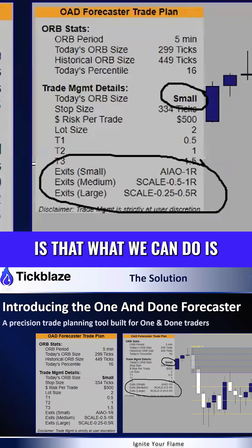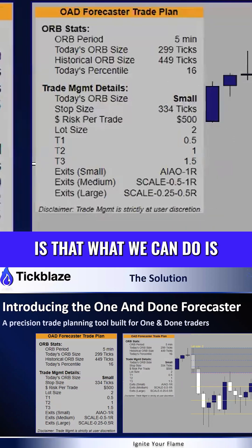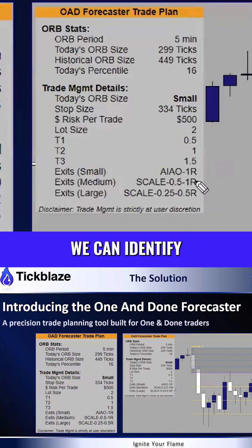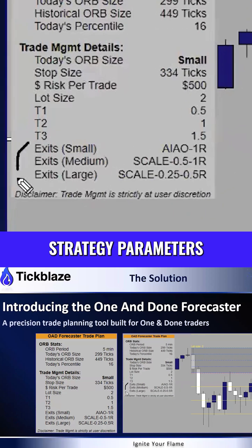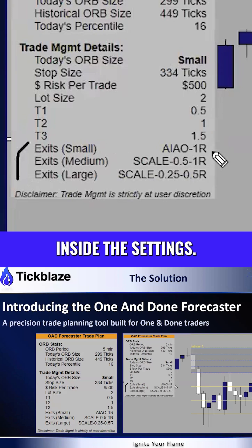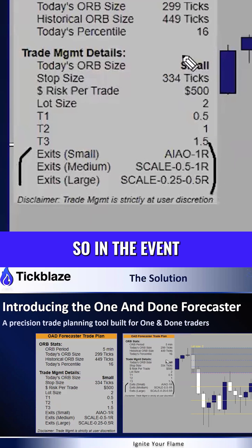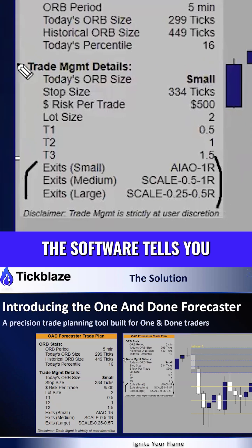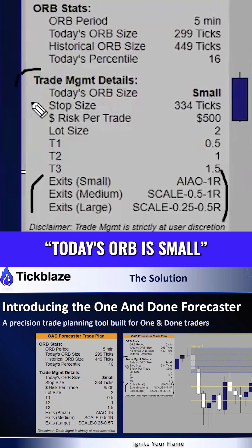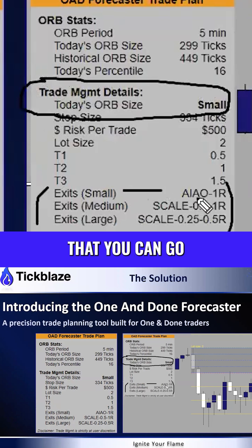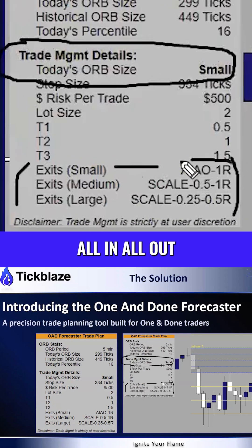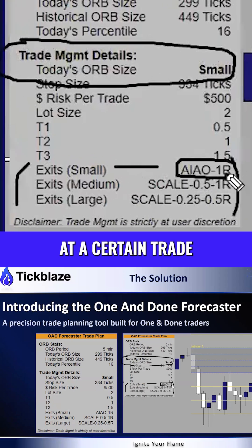What this means is that we can identify and set the strategy parameters inside the settings. So in the event the software tells you today's ORB is small, you'll know that you can go all-in, all-out at a certain trade management thesis.